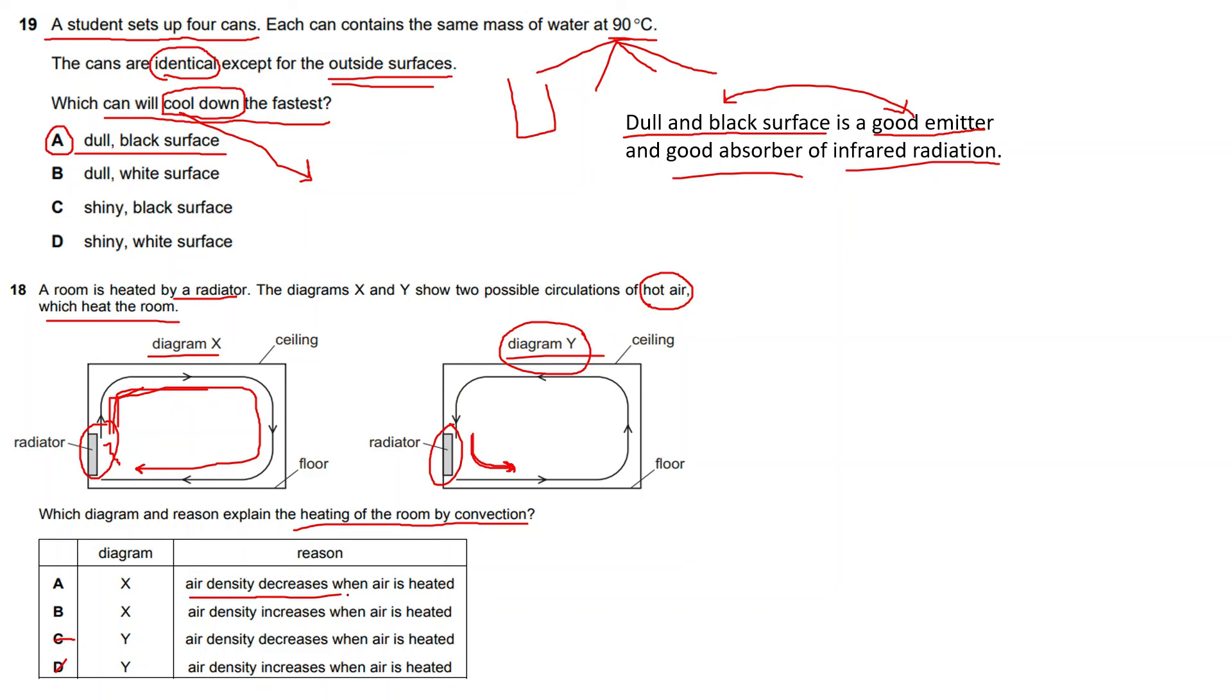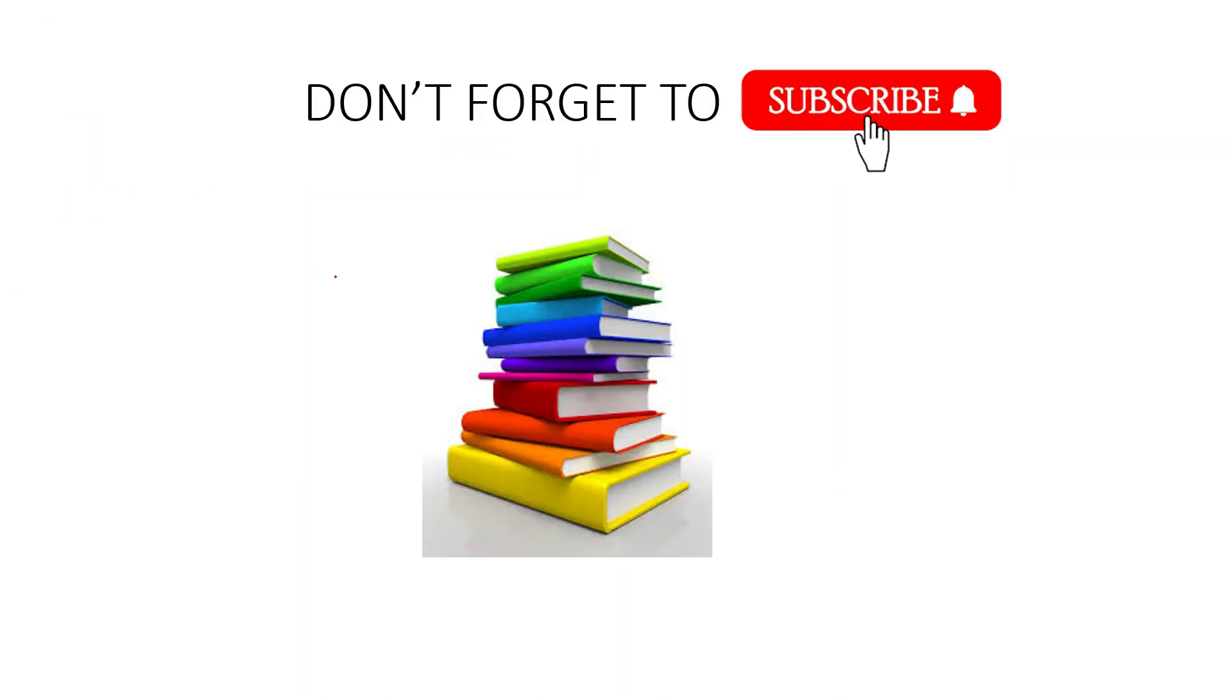Remember that air density always decreases because hot air is less dense, and that's why it moves upwards. Hot air will always rise because it is less dense. So the answer is A, which says diagram X and air density decreases when air is heated, that's why it moves upwards here.